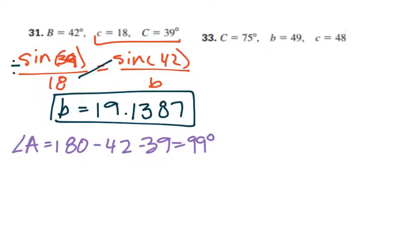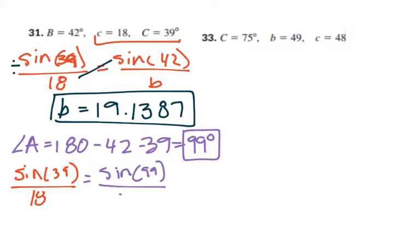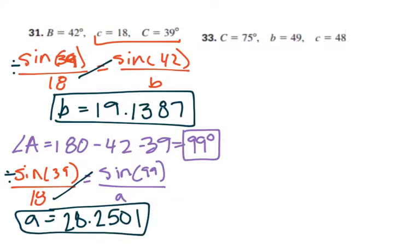And so we have angle A and B, and now we need side A. So we can use that same sine set up of 39 over 18, and set it equal to sine of 99 over our missing side length A. And then again, cross multiply the two digits and divide by the third. So sine of 99, of course in degree mode, times 18 divided by sine of 39 is 28.2501 if you want that. So that is the piece there.